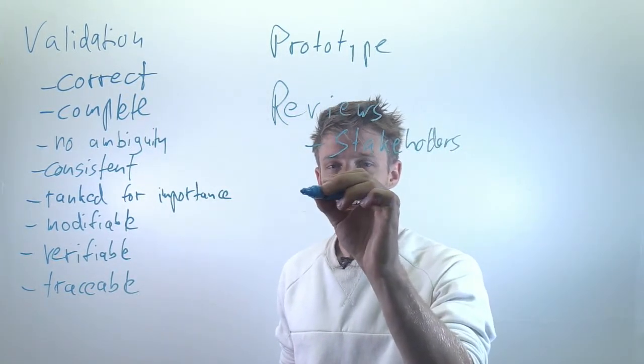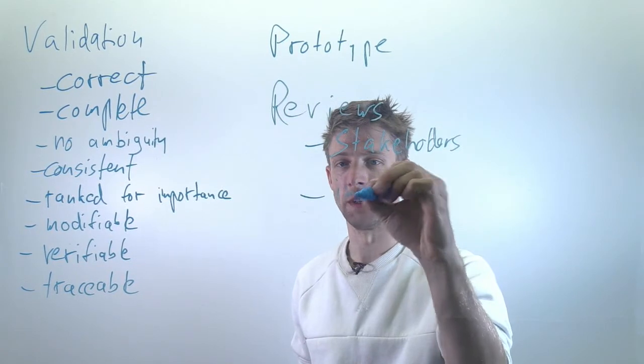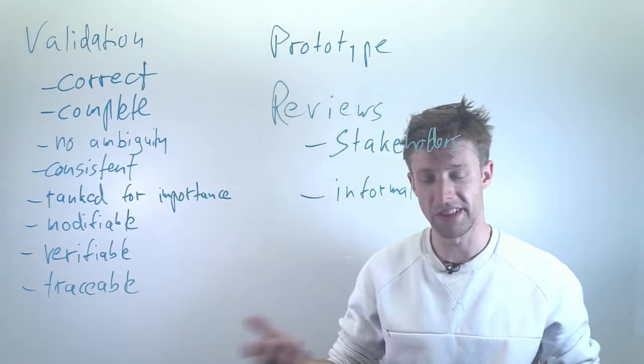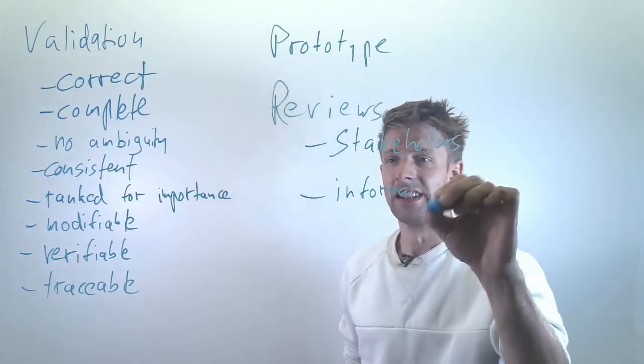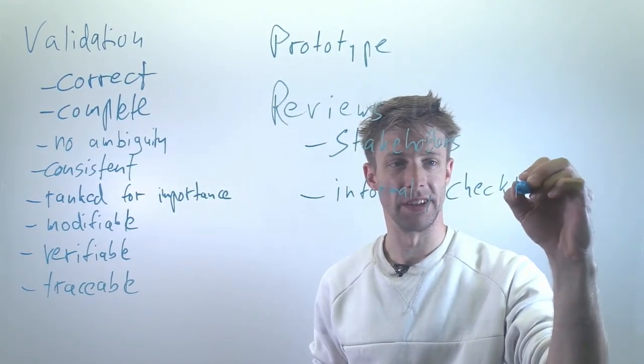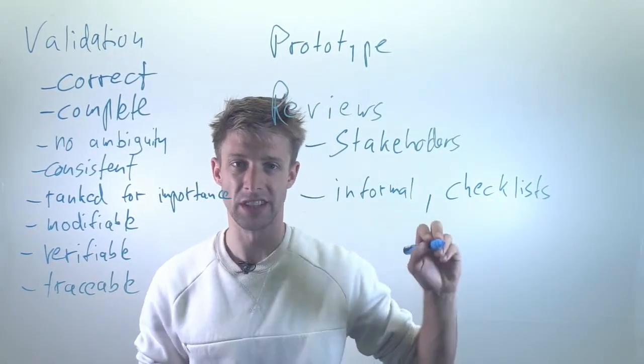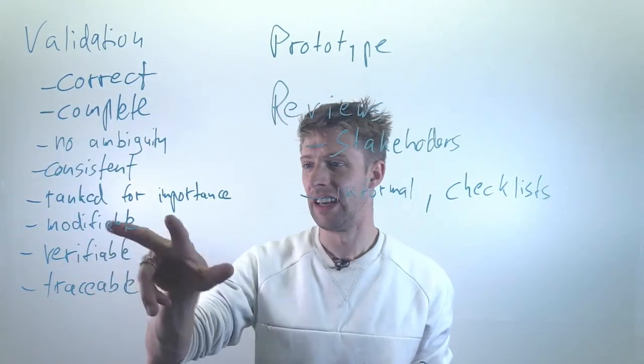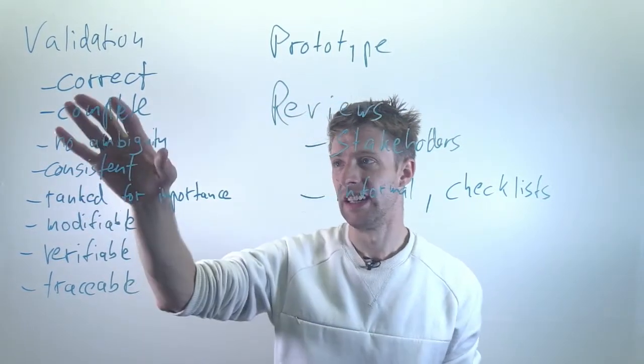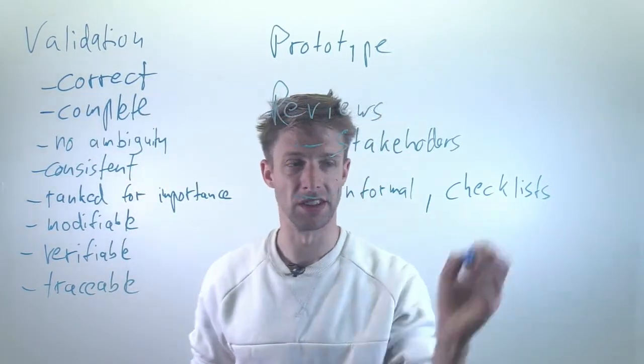The other thing that's important is how exactly you conduct the review and there are different techniques. For example, you can start with informal reviews. You sit down and read and no instructions, just read through and say whatever you think. There might be something and that's actually the next validation technique, but there can be checklists. So you get the specification, you read through it and you have certain things to check off. For example, questions. Is every requirement ranked for importance? Is there a priority for every requirement? Do you understand it in a clear way? And so on. So there might be different questions and you can just check them off.